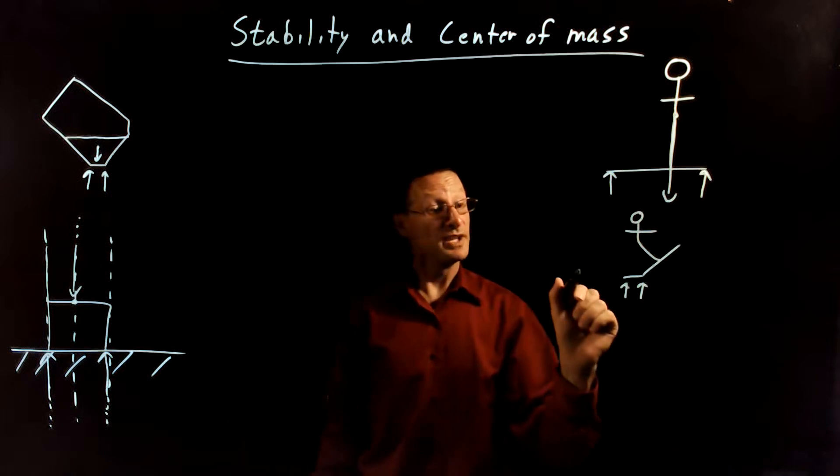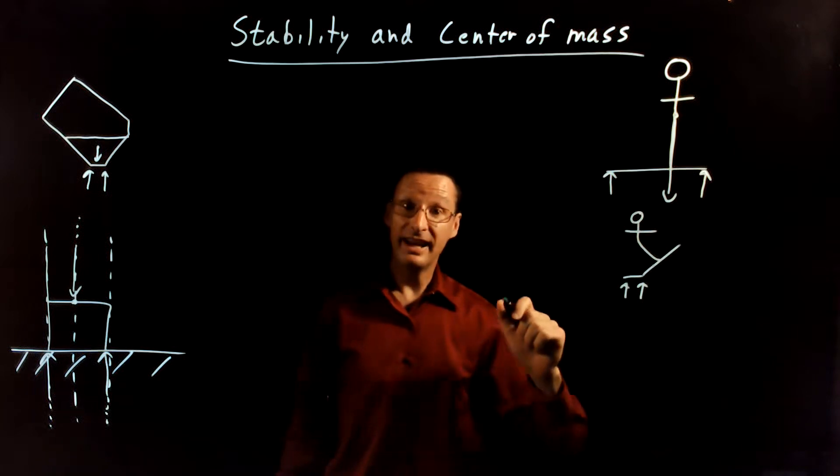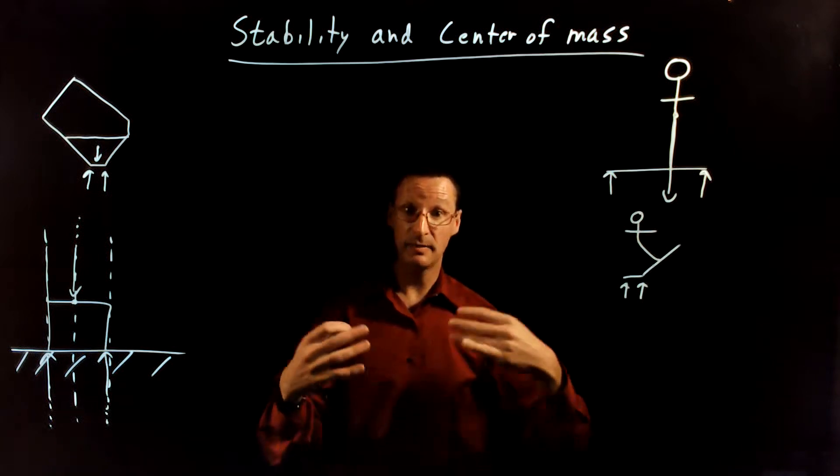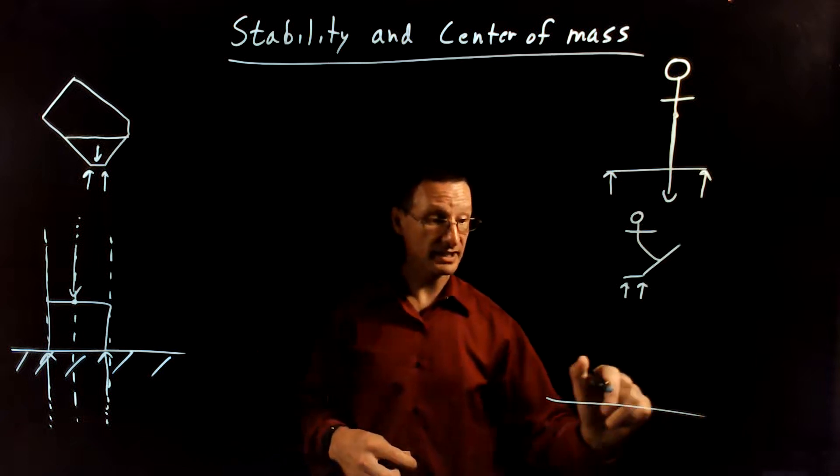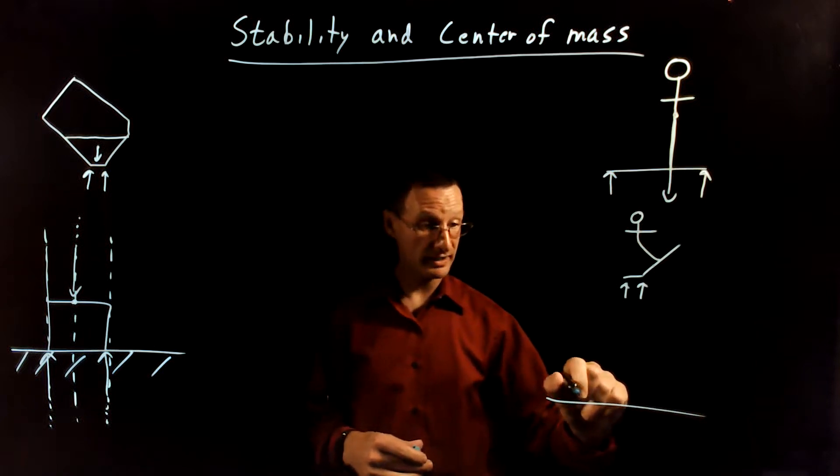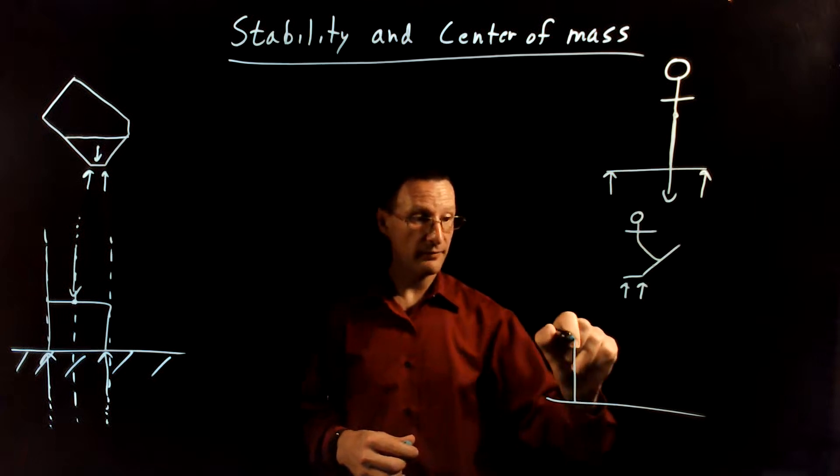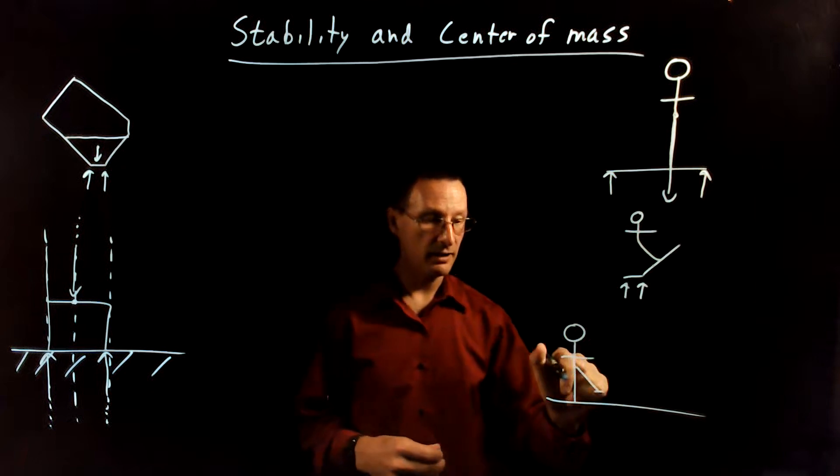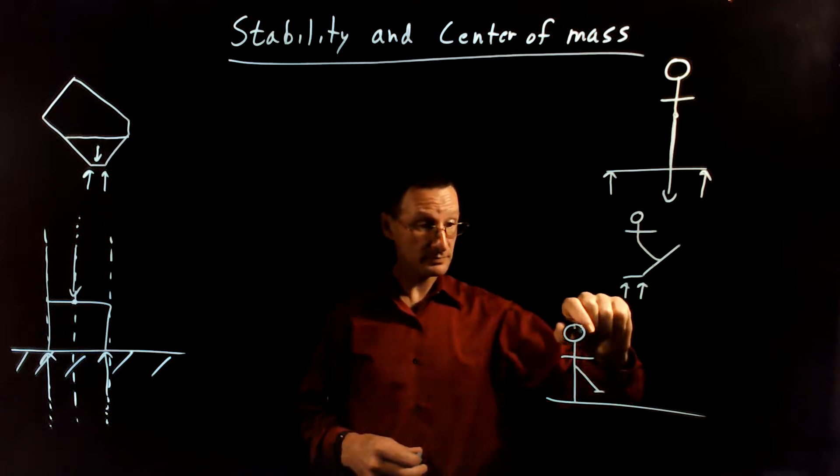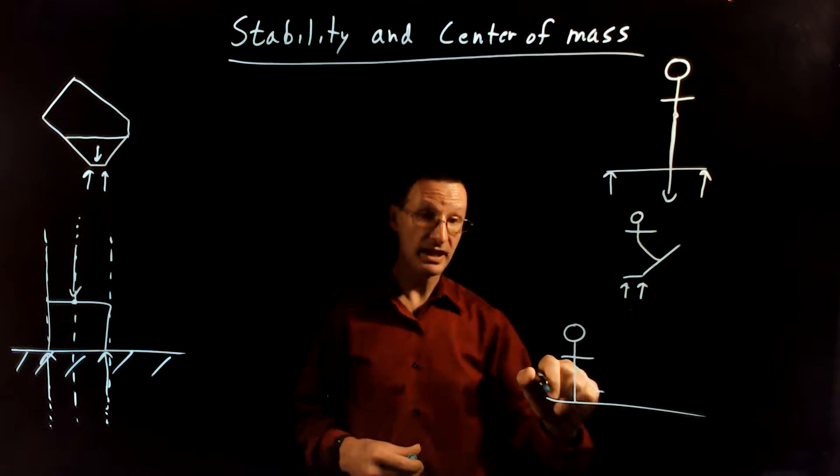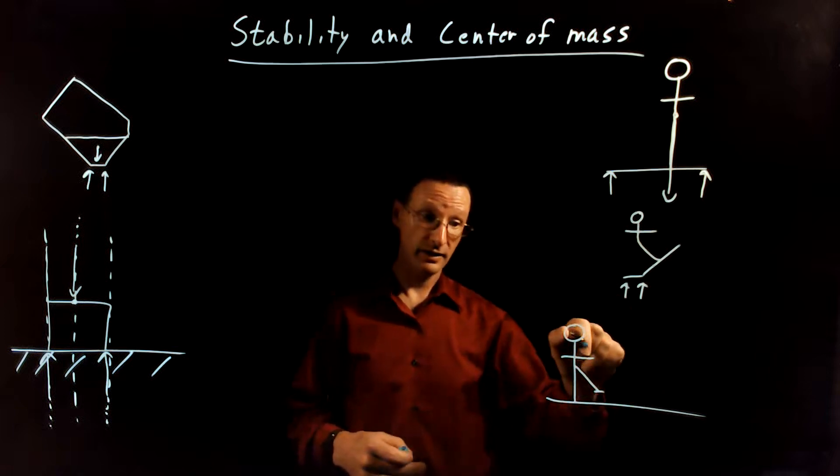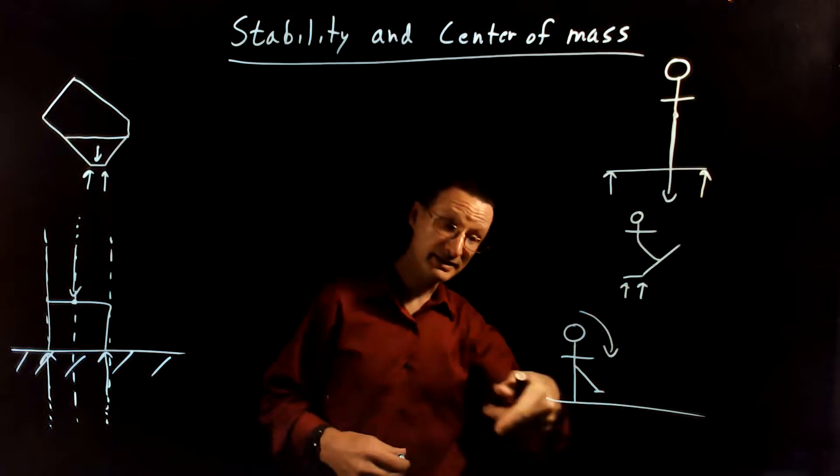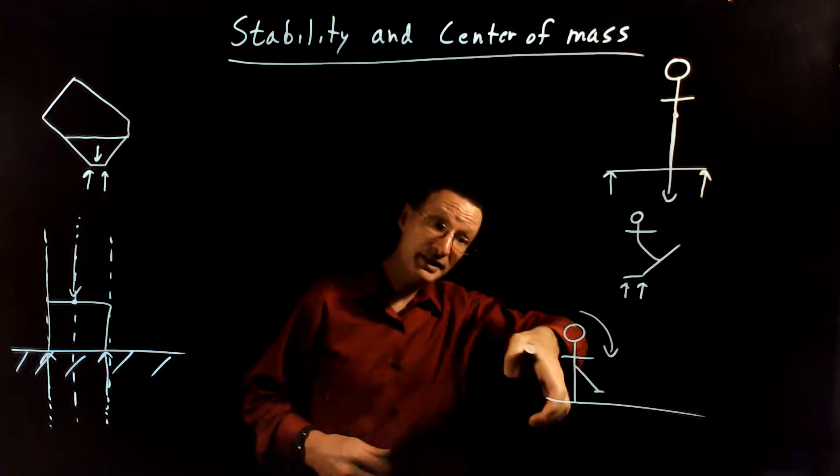Now there's times when you don't want stability, and that is when you want to get moving. You want to have some acceleration or some angular acceleration of some part of your body. And so this can occur, for example, when you're walking. So if you have a person who wants to walk, what they'll do is they'll put their leg out and this shifts their center of mass forward. And so you actually want your center of mass in front of your support point here so that it causes some angular acceleration or some rotation in this direction.